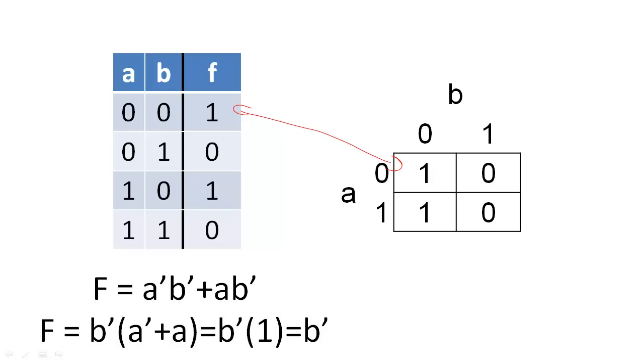The K-map maps corresponding minterms in a way that each cell differs by only one literal from its adjacent cells. So when we see neighboring 1s, we will be able to derive the minimal solution directly from the K-map by checking which literals are the same, and which literals are different between adjacent cells. In this case, B' is constant while A and A' vary.